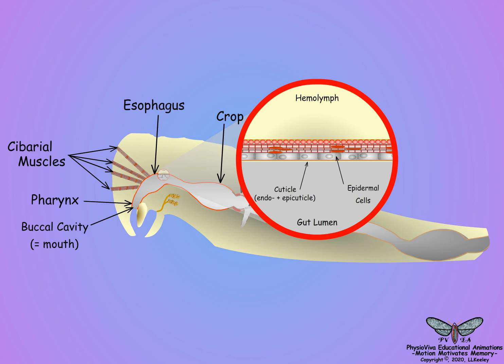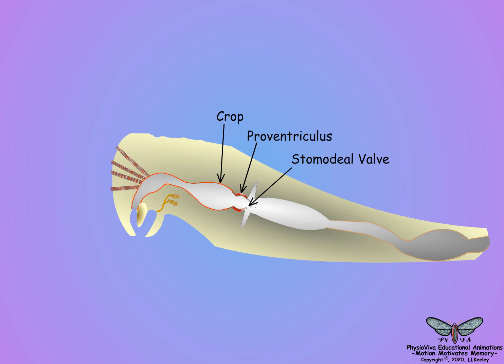At molting, the foregut lining is digested and any undigested residue excreted, and a new cuticle lining is secreted. Over the epidermal cells is a layer of longitudinal muscles, with another outer layer of circular muscles, and finally a connective tissue basement membrane exposed to the hemolymph.